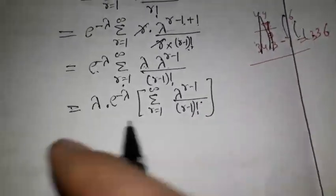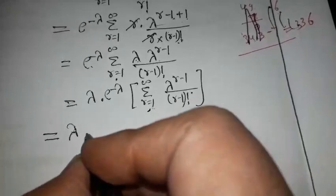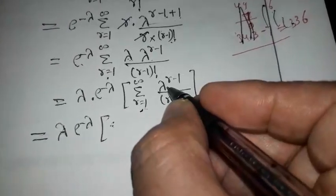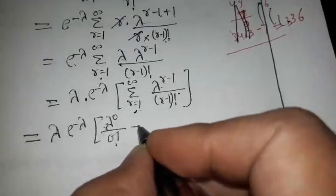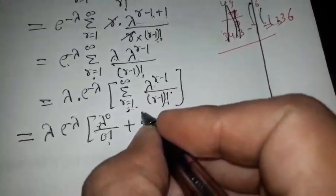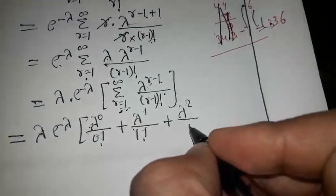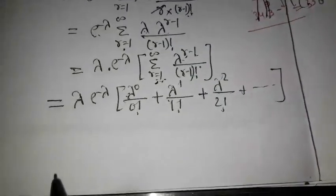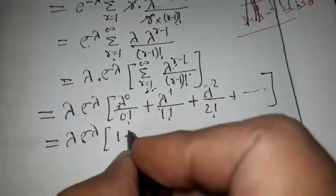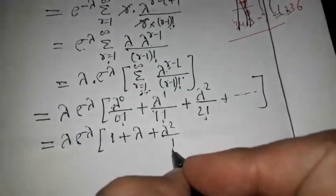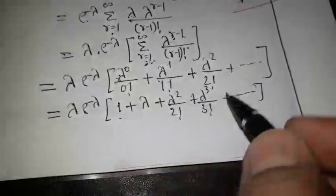Now expanding for different values of r starting from 1: putting r = 1 gives lambda to the power 0 upon factorial 0; r = 2 gives lambda to the power 1 upon factorial 1; r = 3 gives lambda to the power 2 upon factorial 2, and so on. This can be written as lambda into e to the power minus lambda into the series: 1 plus lambda plus lambda squared upon factorial 2 plus lambda cubed upon factorial 3 and so on.